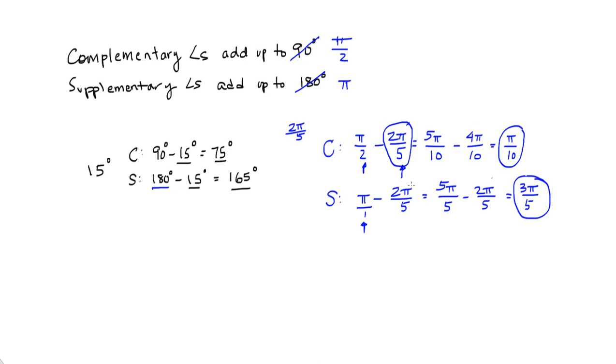So 3 pi over 5 and 2 pi over 5 are supplementary. And that should make sense, because if you add 2 pi over 5 and 3 pi over 5, what do you get? You get 5 pi over 5, which is just pi.